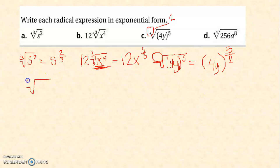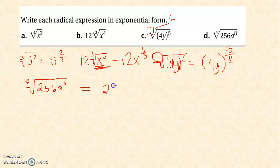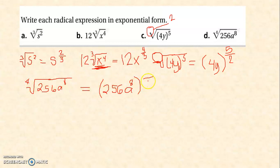The fourth root of 256a raised to 8. There is no open and closed parenthesis around 256a raised to 8. Therefore, the exponent of 256 is 1, and the exponent of a is 8. The denominator here is the index, which is 4. Since it is not enclosed in parentheses, the numerator for 256 must be 1. So the exponential form is 256 raised to 1 over 4, times a raised to 8 over 4.